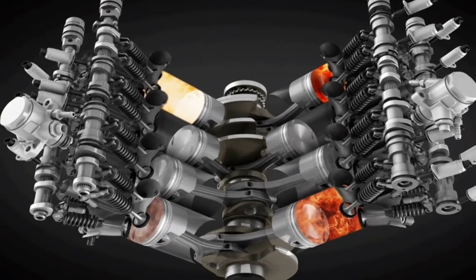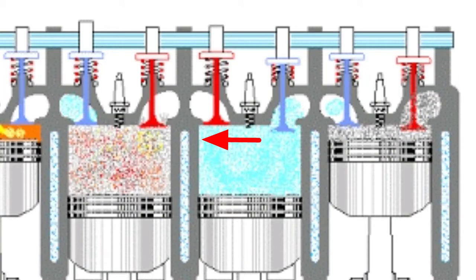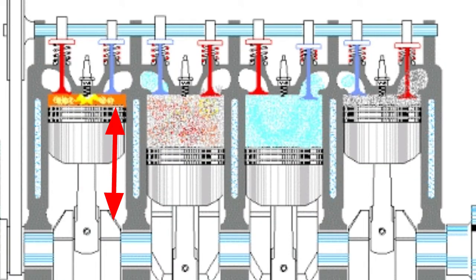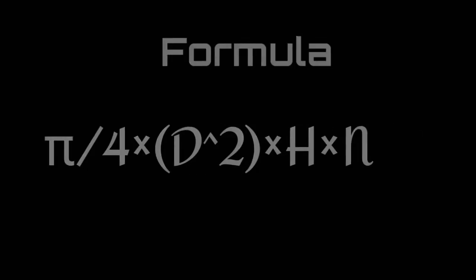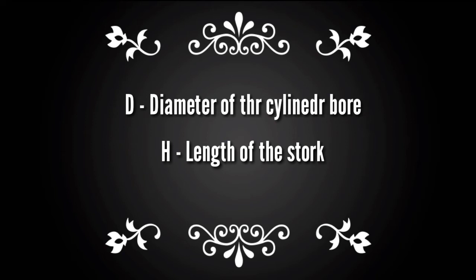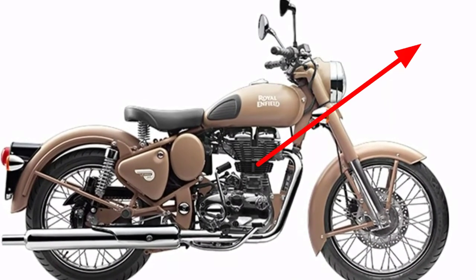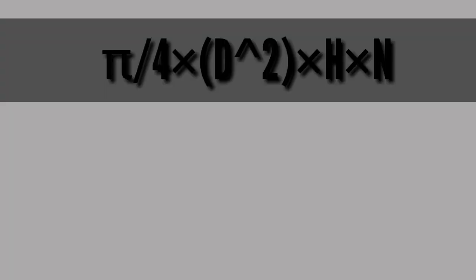This is the multi-cylinder engine. How do you calculate this? The formula is very simple: π/4 × d² × h × n, where d is the diameter of the cylinder, h is the length of the stroke, and n is the number of cylinders. For the Classic 350, d is 70mm and h is 90mm, giving 346-point-something cc, which rounds off to 350cc.